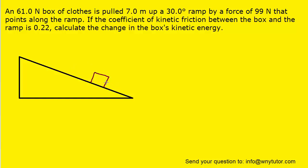To do that, we have to draw a free body diagram showing the forces acting on this box. The most obvious force is the gravitational force, which points straight down, but it's most useful to break this gravitational force into its x and y components. The x component points along the surface of the ramp, down the ramp, and its magnitude is the gravitational force times the sine of the angle formed by the ramp. This is always true for any object on an incline.